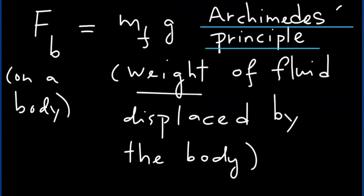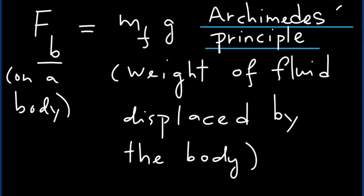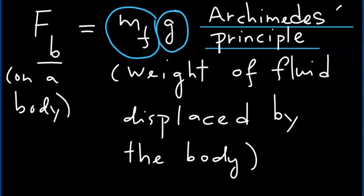Having understood what buoyant force is, let's describe Archimedes' Principle in detail. Archimedes' Principle states that the buoyant force on an object in a liquid is given by the weight of the fluid displaced by that object, which equals the mass of the fluid displaced times the gravitational acceleration.